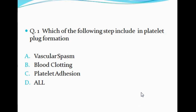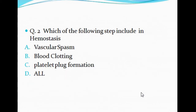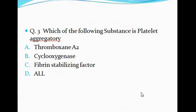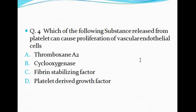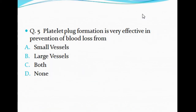MCQ Question 1: Which of the following steps is included in platelet plug formation? (a) Vascular spasm (b) Blood clotting (c) Platelet adhesion (d) All are correct. Question 2: Which steps are included in hemostasis? (a) Vascular spasm (b) Blood clotting (c) Platelet plug formation (d) All are correct. Question 3: Which substance is a platelet aggregator? (a) Thromboxane A2 (b) Cyclooxygenase (c) Fibrin stabilizing factor (d) All are correct. Question 4: Which substance released from platelets causes proliferation of vascular endothelial cells? (a) Thromboxane A2 (b) Cyclooxygenase (c) Fibrin stabilizing factor (d) Platelet growth factor. Question 5: Platelet plug formation is very effective in prevention of blood loss from (a) small vessels (b) large vessels (c) both (d) none of these.